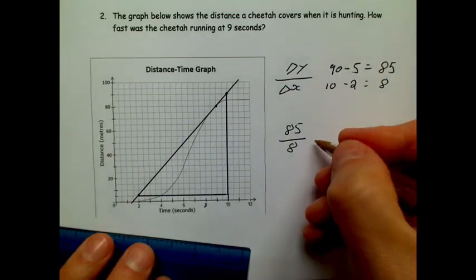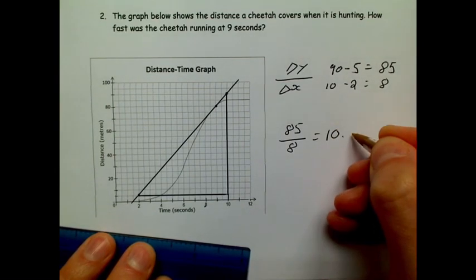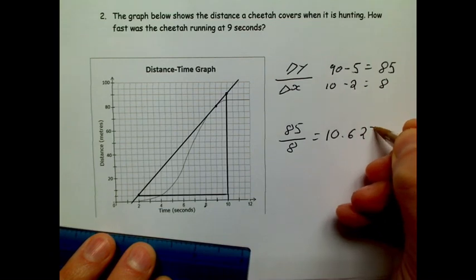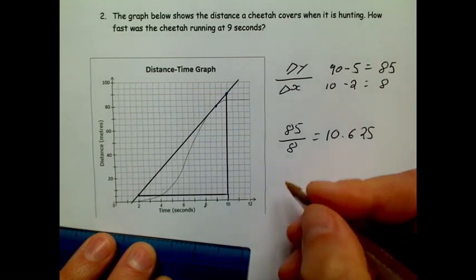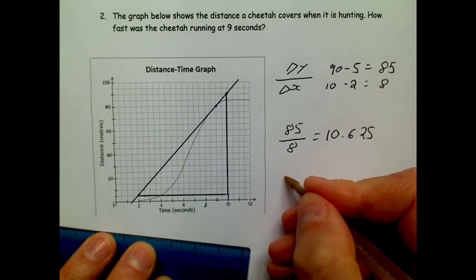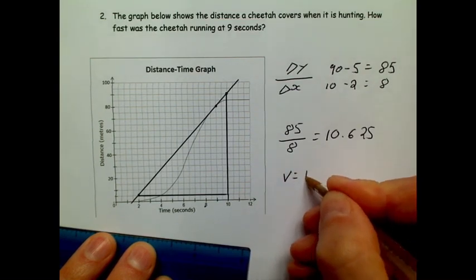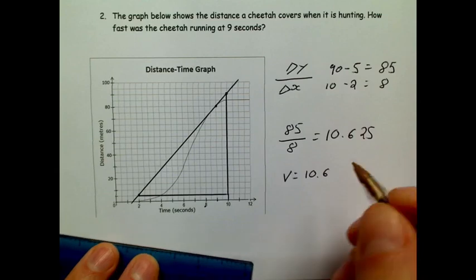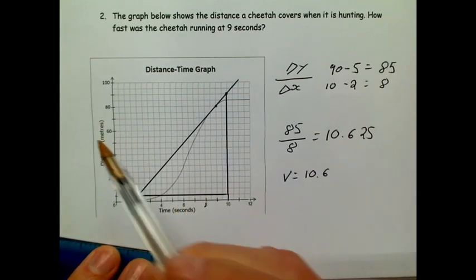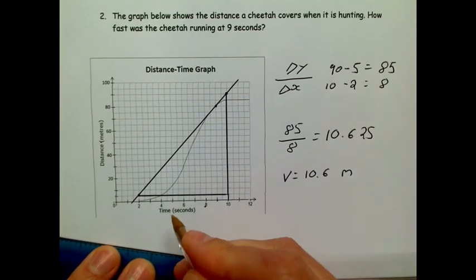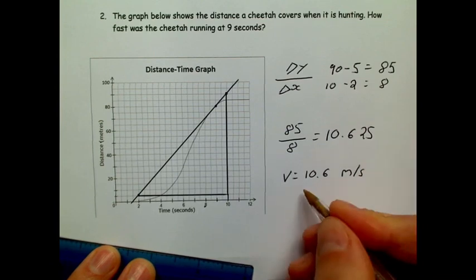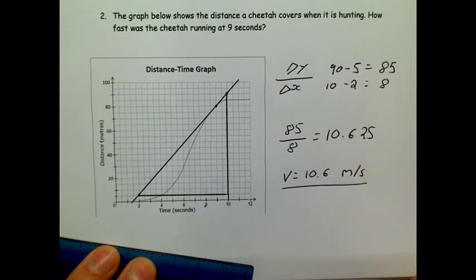So my gradient is going to be 85 divided by 8. So I'll just type that into a calculator, and that gives me an answer of 10.625. So my speed to one decimal place is going to be 10.6, and my distance is measured in meters and my time is seconds, so I have 10.6 meters per second.